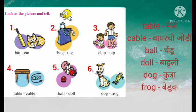Now let's see the next image: ball, doll. Ball manje zh chendu. Ani doll manje bhauli. Now let's see the last image: dog, frog. Dog manje zh kutra. Ani frog manje kai? Taur, beduk. Right?